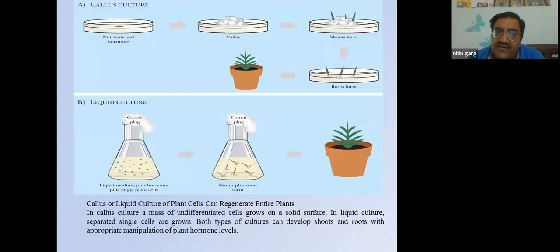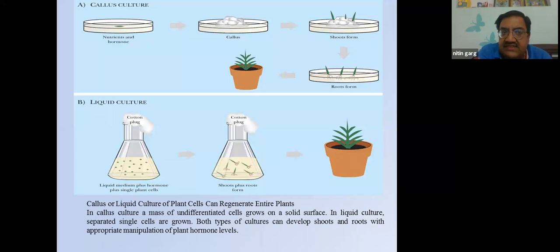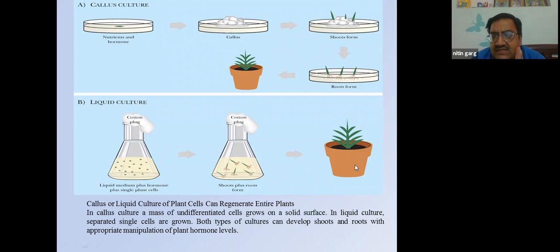In callus culture on solid medium, nutrients and hormones are added, callus is formed, shoots are formed from callus, then roots, and the plantlet undergoes hardening. In liquid culture (suspension culture), liquid medium plus hormone is used, a single plant cell undergoes shooting and rooting, and the plantlet is hardened in a pot. In both solid and liquid culture, we start from a single cell.